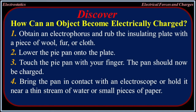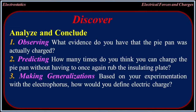How can an object become electrically charged? Obtain an electrophorus and rub the insulating plate with a piece of wool, fur, or cloth. Lower the pie pan onto the plate. Touch the pie pan with your finger — the pan should now be charged. Bring the pan in contact with an electroscope or hold it near a thin stream of water or small pieces of paper. What evidence do you have that the pie pan was actually charged? Based on your experimentation with an electrophorus, how would you define electric charge?